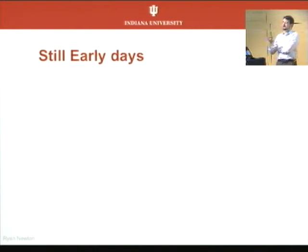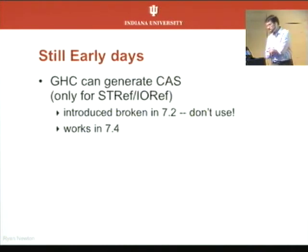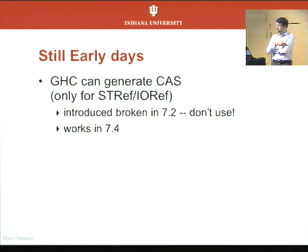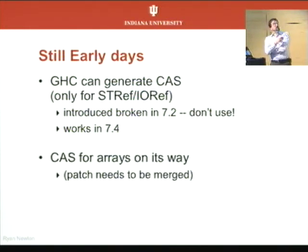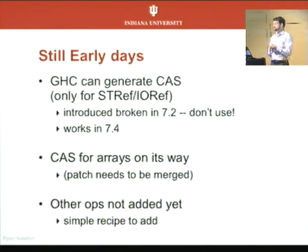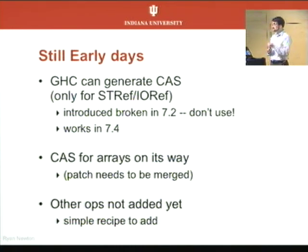This is all still very early days. GHC just got the ability to generate compare-and-swap instructions in 7.2 — except it's broken there due to a missing GC memory barrier, so please don't use it. It works in 7.4, so you can download this today with 7.4 and use it. There's a patch I need to get merged for compare-and-swap on arrays; right now we just have it on IORefs and STRefs. It's also pretty easy to add the other operations — I can send you a recipe for making a GHC patch that does fetch-and-add or any other operations you need.